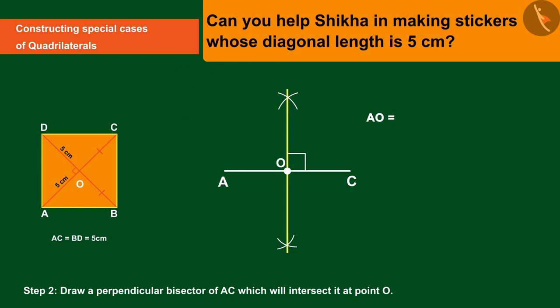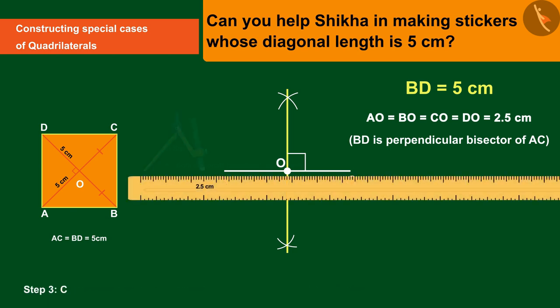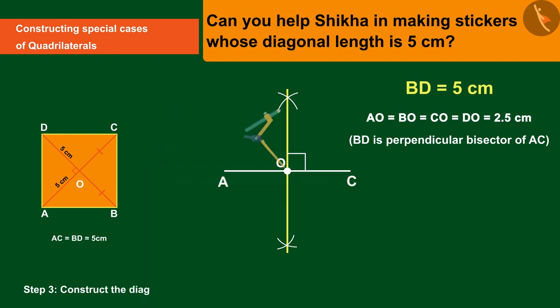Assuming O as the center and equal to half of BD, that is 2.5 centimeters radius of measurement, we mark an arc between the perpendicular bisectors on AC as we intersect it at point B and point D.